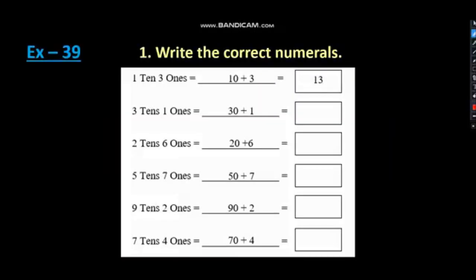Let's solve first exercise 39. Here you can see write the correct numerals. Here we have 1 ten, 3 ones. If we write them in place value, ones, tens. So, 1 in a tens place and 3 in a ones place. What will we get? We will get 13 here, right?